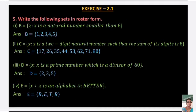Question 5: Write the following sets in roster form. First: B = {x : x is a natural number smaller than 6}, so B = {1, 2, 3, 4, 5}. Next: C = {x : x is a two-digit natural number such that the sum of its digits is 8}. The two-digit numbers whose digits sum to 8 are 17, 26, 35, 44, 53, 62, 71, and 80.